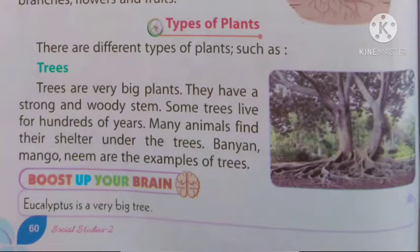Some trees live for hundreds of years. कुछ पौधे जो होते हैं वो सैकड़ों साल तक जीवित रहते हैं। Many animals find their shelter under the trees. उसी trees के नीचे बहुत सारे जानवर अपना घर बनाकर रहते हैं अपनी सुरक्षा के लिए। Banyan, mango, neem are examples of trees. बरगद, आम, नीम यह सब trees के examples हैं। यह बड़े-बड़े होते हैं।